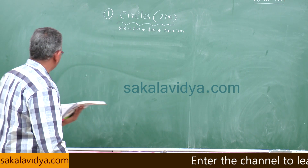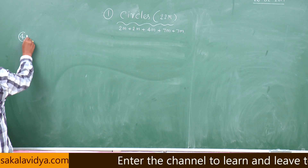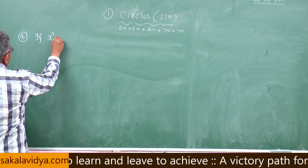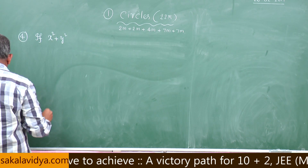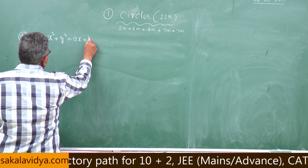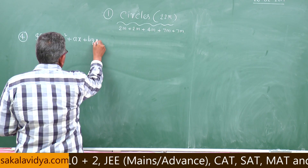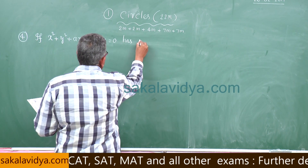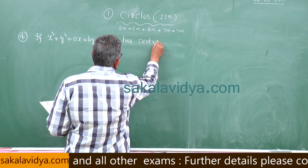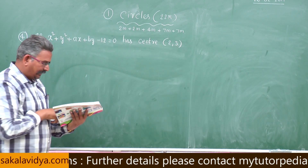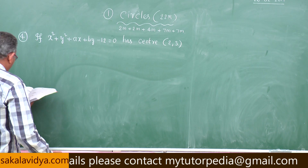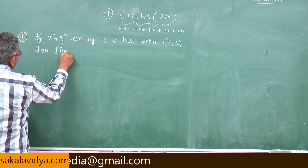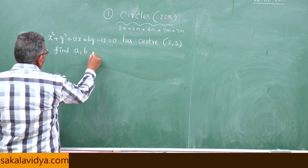Next, fourth problem. If x squared plus y squared plus ax plus by minus 12 is equal to 0 has center 2 comma 3, that means center is at 2 comma 3. Then find a, b, and the radius.